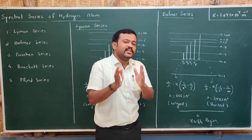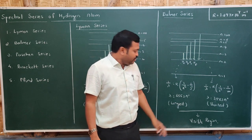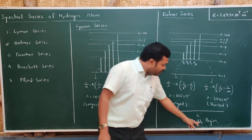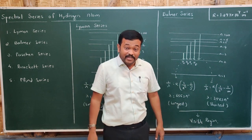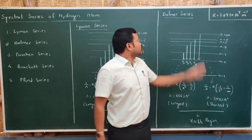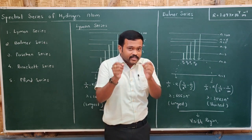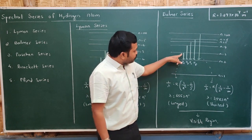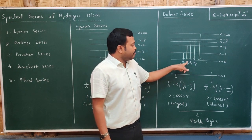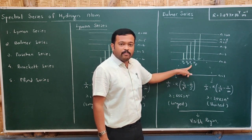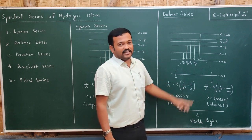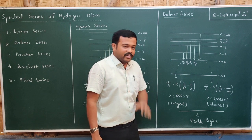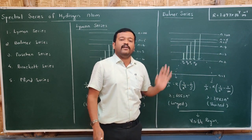The Balmer series lies in the visible region of the electromagnetic spectrum, ranging from about 3,500 to 6,500 Å. Since these lines can be seen, we can assign names to them: the first member is called H-alpha, second is H-beta, third is H-gamma, and fourth is H-delta. The Balmer series lies in the visible region.